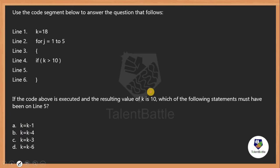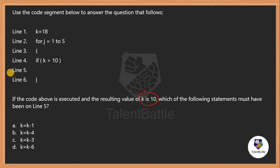The important point here is our resultant value should be k equals 10. We have to cross-check which option — k equals k-1, k-4, k-3, or k-6 — will be suitable at line number 5 so that at the end of the code segment the value of k will be 10.